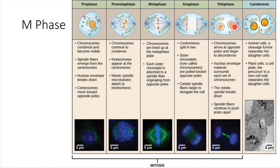Each set gets a new nuclear envelope formed around it. So the nuclear envelope starts to form around the chromosomes. And at this point, we don't need that mitotic spindle anymore, so it starts to break down.